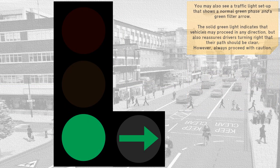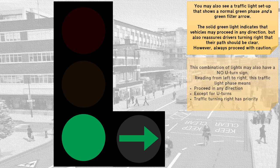You may also see a traffic light setup that shows a normal green phase and a green filter arrow. The solid green light indicates that vehicles may proceed in any direction, but also reassures drivers turning right that their path should be clear. However, always proceed with caution.